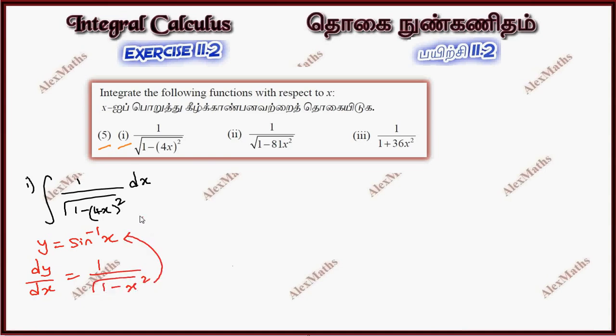We have integration. When x is equal to 4x, the answer is 1 by 4 sin inverse 4x plus c.